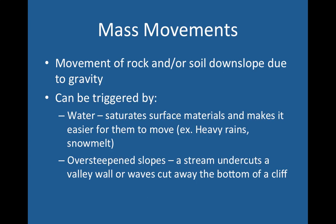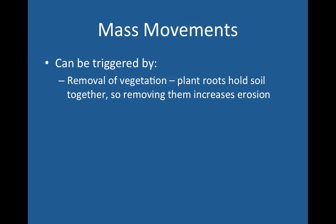Mass movements can also be caused by oversteepened slopes. If a stream undercuts a valley wall, waves cut away at the bottom of a cliff, or human construction makes slopes too steep, that can cause mass movements. It can also be triggered by the removal of vegetation — plant roots hold the soil together, so plants combat erosion. If you remove those plants, that increases erosion in an area. And finally, earthquakes: the shaking of the earth can trigger a landslide or mass movement.